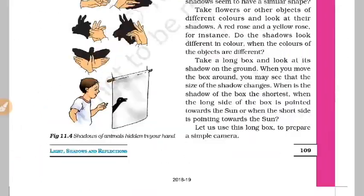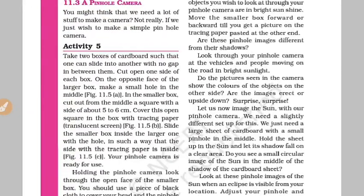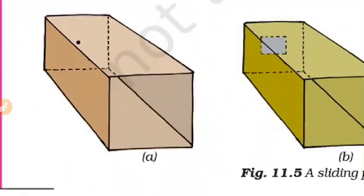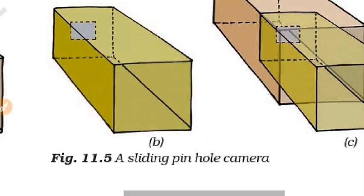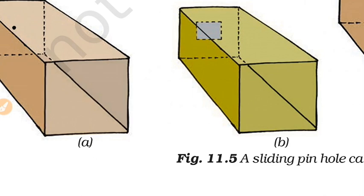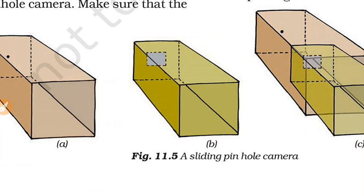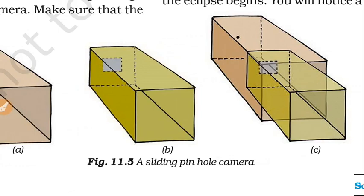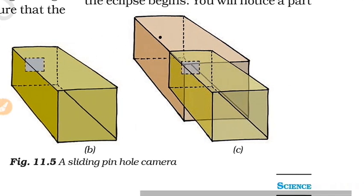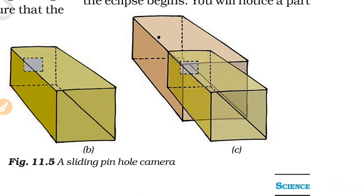There is also an activity with different animal shadow shapes. Next, let's look at the pinhole camera. You take a small box and slide another box inside it. You put a small hole on one end, and on the other end you cut a square shape and cover it with tracing paper to see the image.